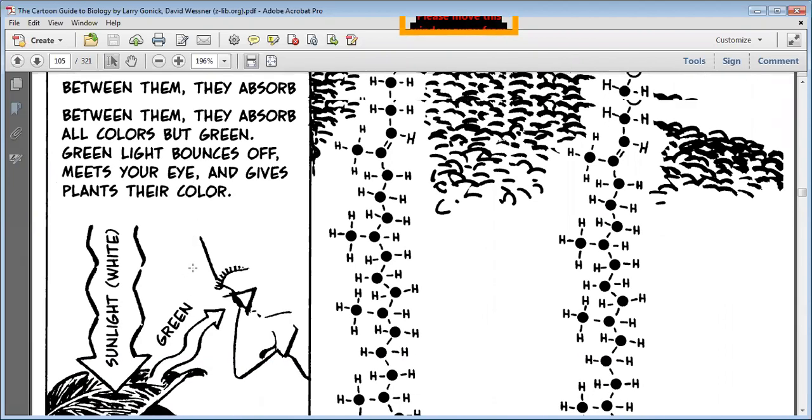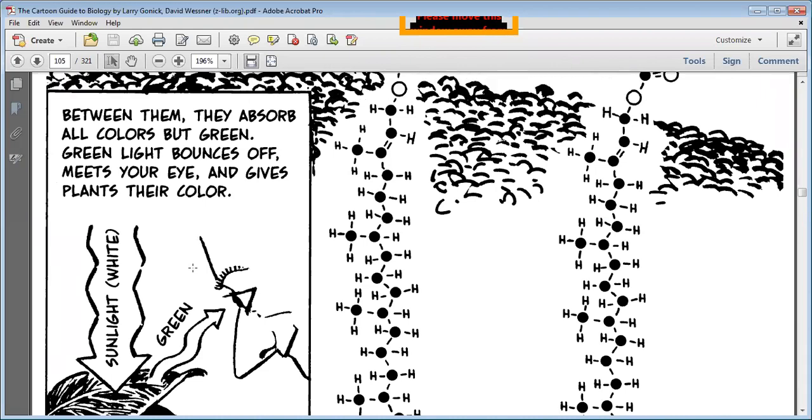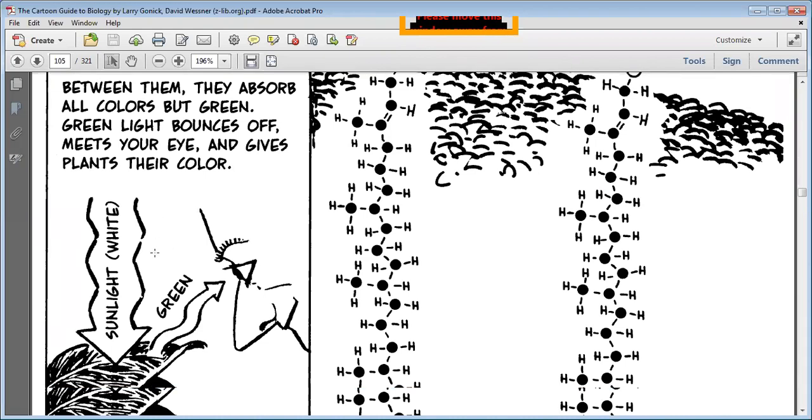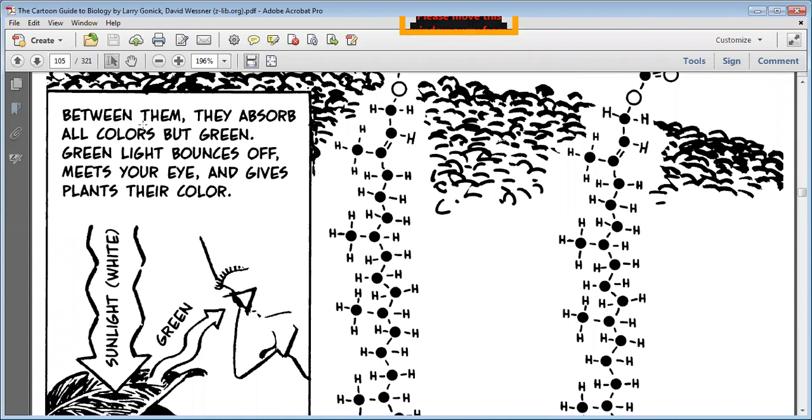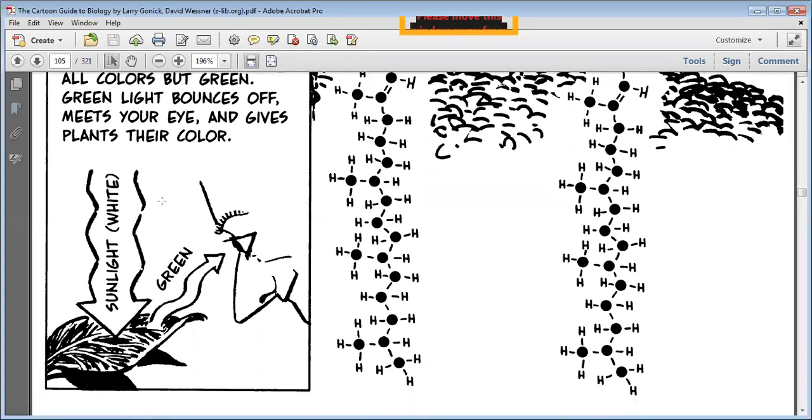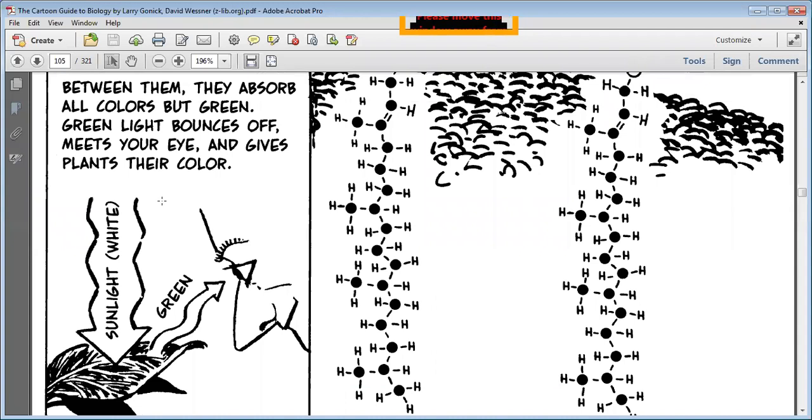Between them, the sunlight is white color. They absorb all colors but green. Light bounces off, meets your eye, and gives the plants their color. So this is the main logic. Keep it in mind and lock it.